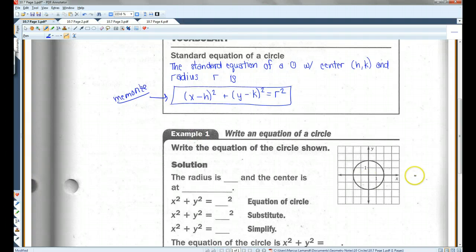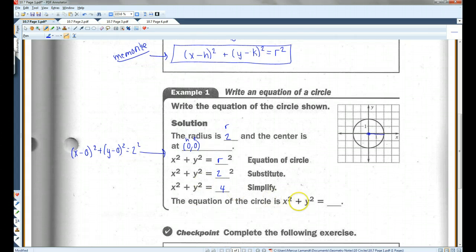Write an equation of a circle. So, given this circle, the radius is 2, and the center is at (0, 0). So this is your r, this is your h, this is your k. If you plug all three of these into this equation, you're going to get x minus 0 squared plus y minus 0 squared equals 2 squared. This can just become x squared plus y squared equals 2 squared, which equals 4. So the equation of the circle is x squared plus y squared equals 4.